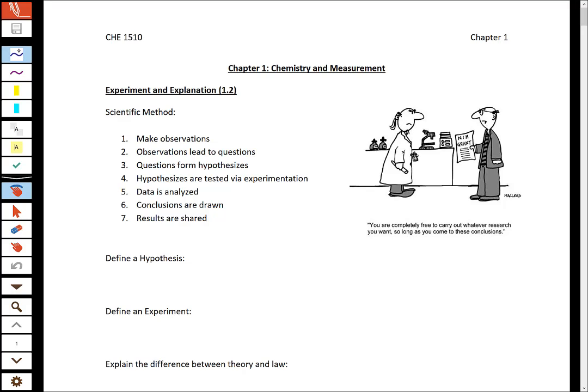All right, so let's talk first about the scientific method. Hopefully you've seen the scientific method before. This is the order that the steps go in. So you would make observations. Those observations would get you curious. You'd think up a good question and think up a possible explanation, which would be your hypothesis.